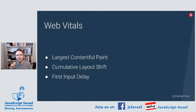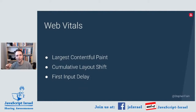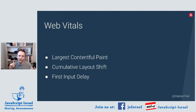The last Web Vital is First Input Delay. This is really based on what a user is actually going to end up doing — when a user does a first interaction, whether clicking on something or a keyboard input, how long does it take to respond to that first action? There's no way to automate this measurement because it's dependent on what your users do and what you've designed into your application. Using these metrics can be a really helpful way to understand whether your users are having a good time.